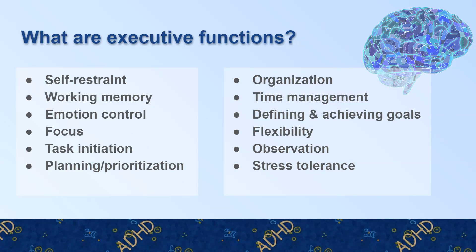What are executive functions? These are the 12 big executive functions that are involved in the frontal lobe of our brain. Many of these don't even fully develop until people are closer to age 25. So even if your students are not lacking in executive functions due to external reasons such as ADHD or a learning disability, they may still not have all of these. These are skills you can build and work on, and our current K-12 system doesn't always spend as much time on them as could be useful.